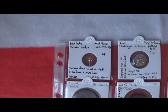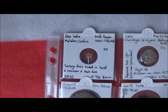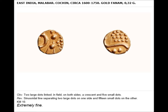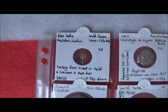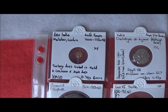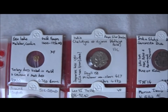Hello, today I'm going to show you a mixture of coins. The first is a very small gold coin called a fanam, which was produced in the 1600s. It shows quite a stylized design of dots and a crescent moon.